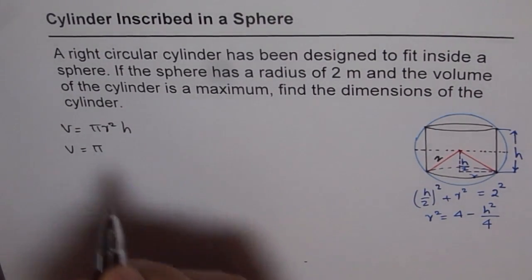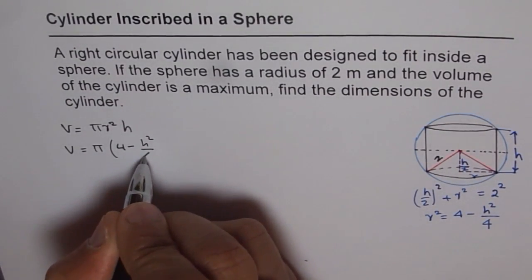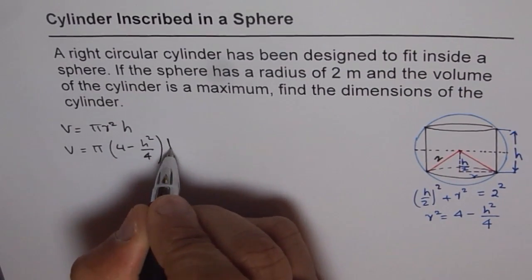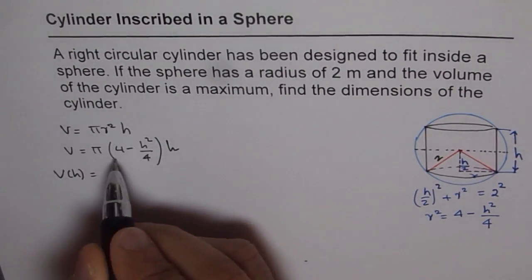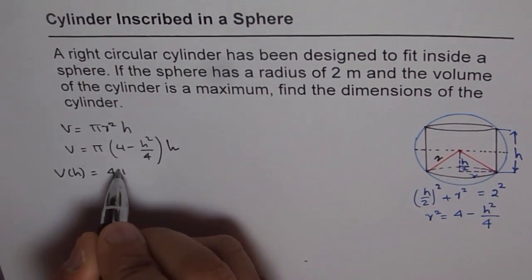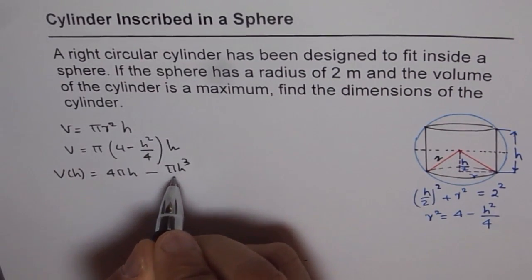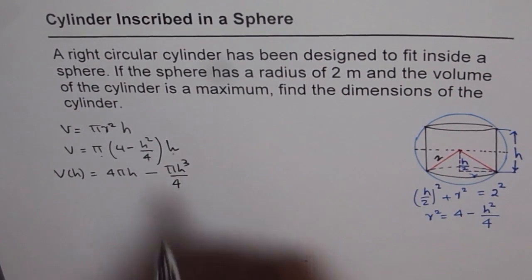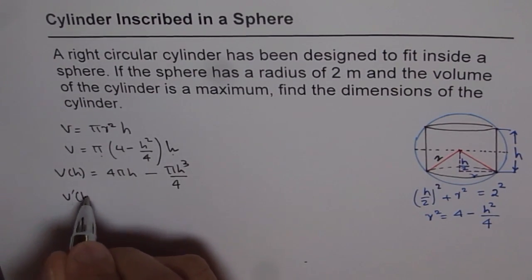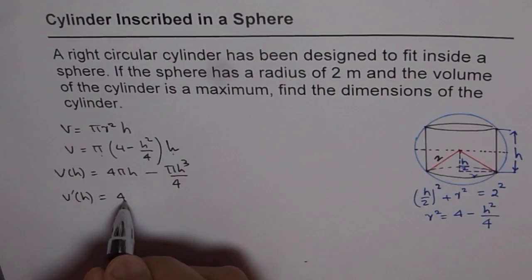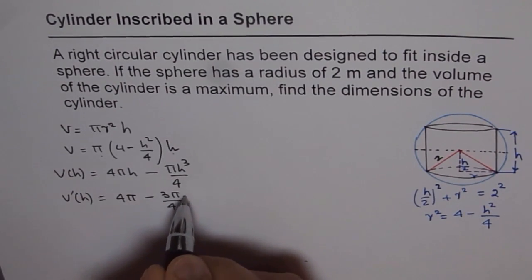We have V = π × (4 − h²/4) × h. So now we have volume in terms of height. Opening the bracket we get 4πh − πh³/4. The derivative of volume with respect to height is 4π minus 3π/4 × h².